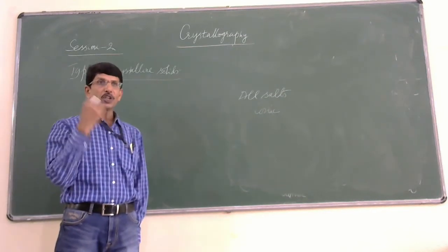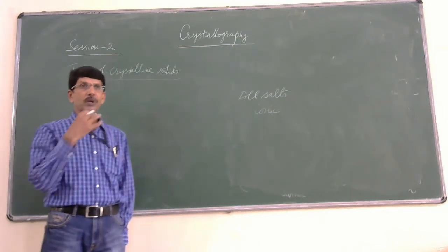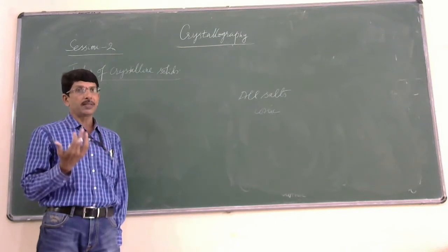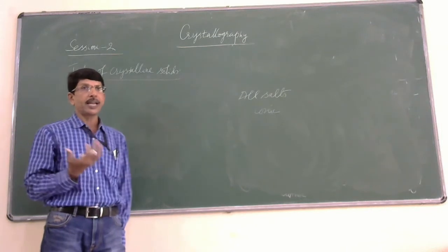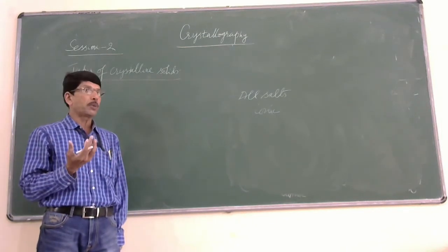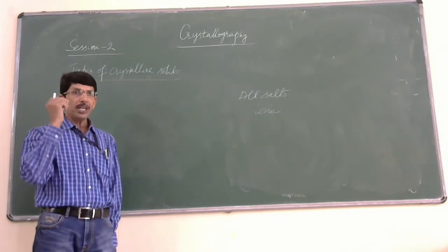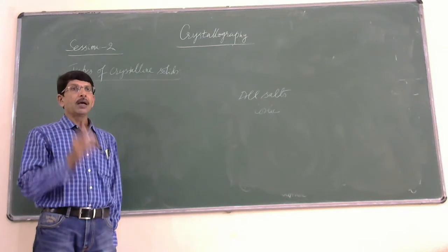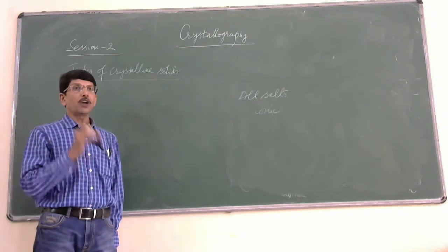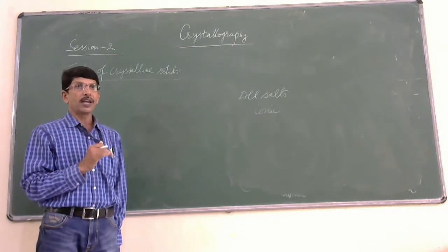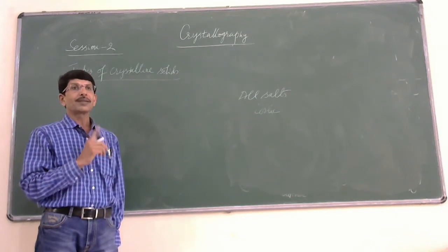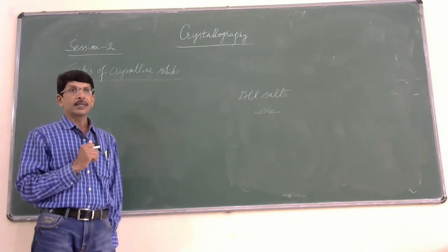You name any solid: sodium chloride, potassium chloride, calcium chloride, magnesium chloride — you name any such solid. All these chloride salts and similar ionic compounds are classic examples of crystalline solids.